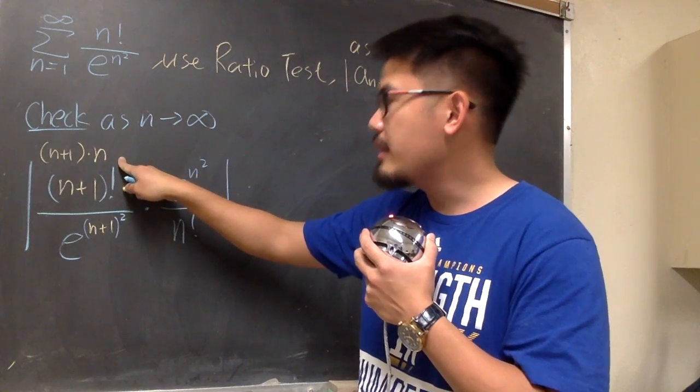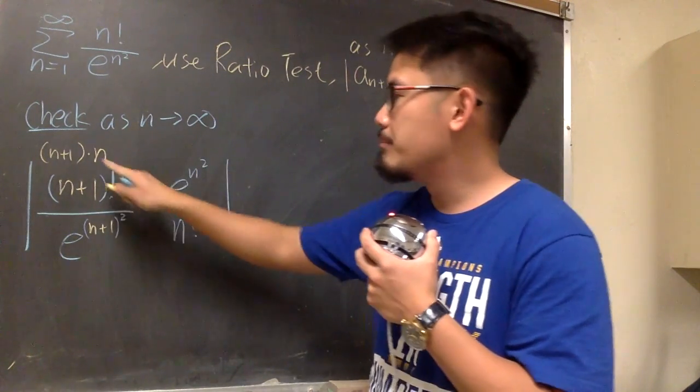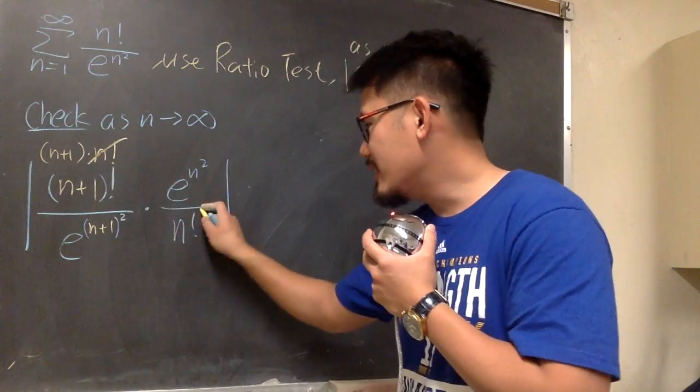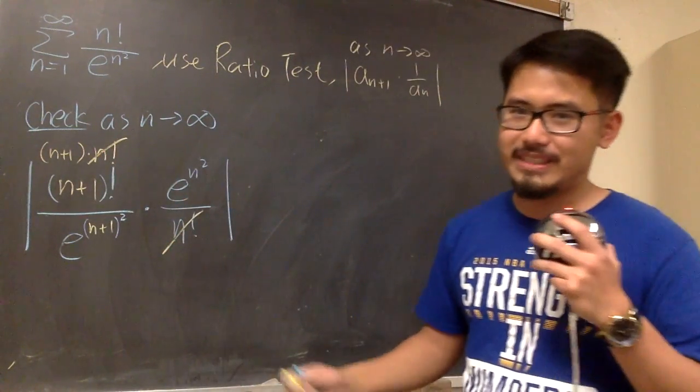And then we will have n-1, n-2, and so on. But all this is just n factorial. This n factorial and this n factorial cancel each other out. That's very nice.